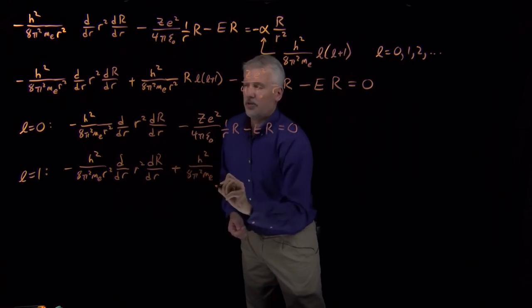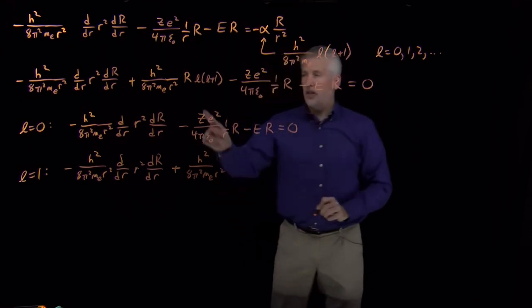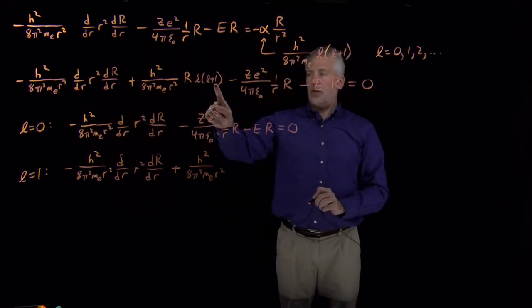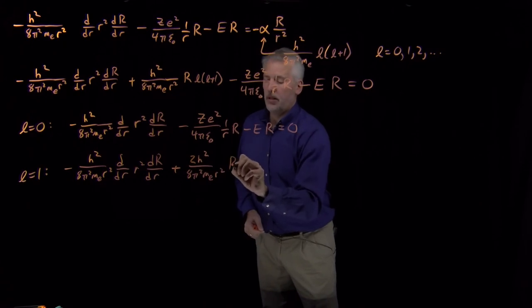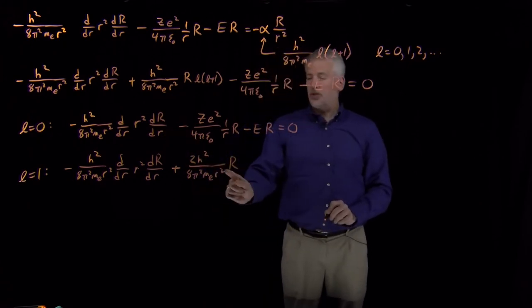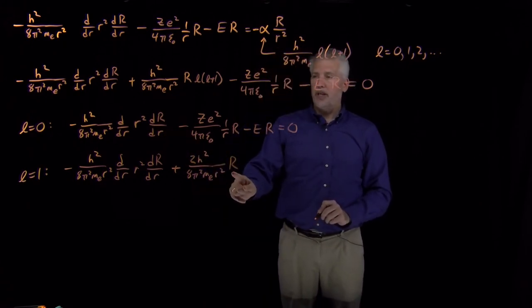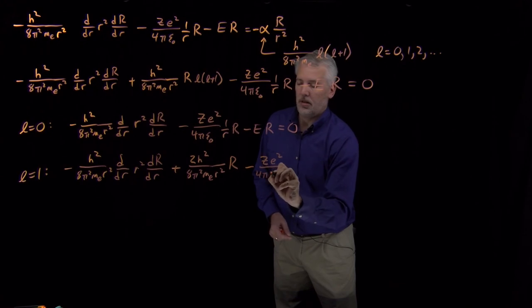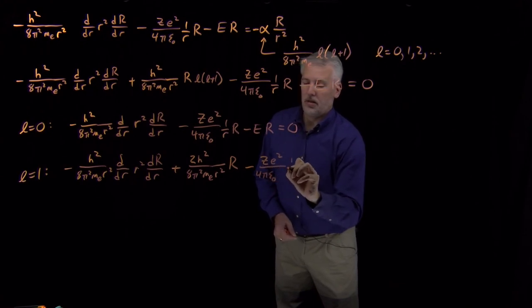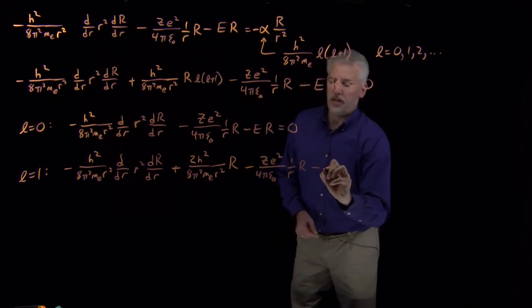And when L equals 1, 1 times 2 gives me a 2. So I have some constants times the radial wave function itself, to which I add the Coulomb term and the energy term.